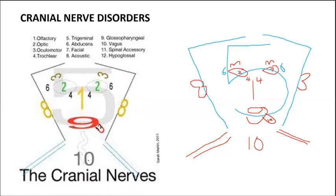Nine is the glossopharyngeal nerve; ten is the vagus nerve — regulates heart rate and smooth muscles in the airway, so to test it you check for the gag reflex; eleven is the spinal accessory nerve innervating muscles that move the head, neck, and shoulders; twelve is the hypoglossal nerve innervating the muscles of the tongue — important for swallowing and speech.